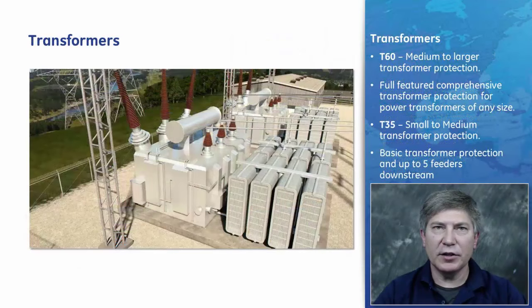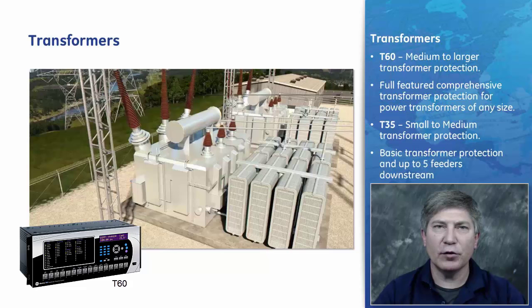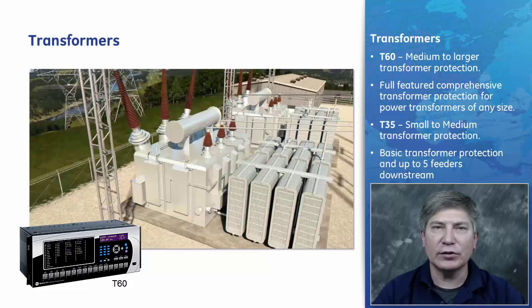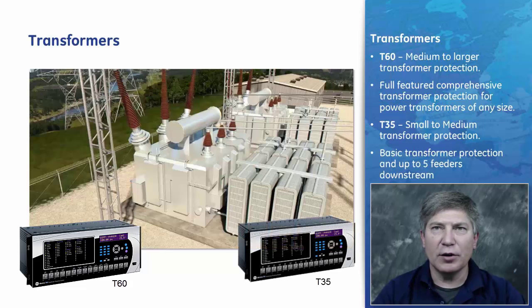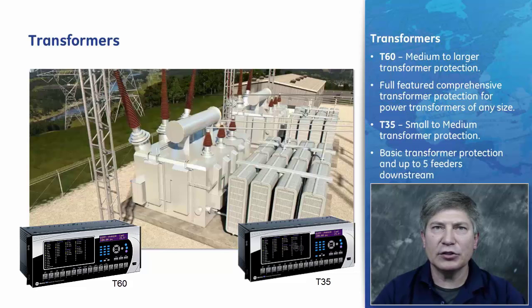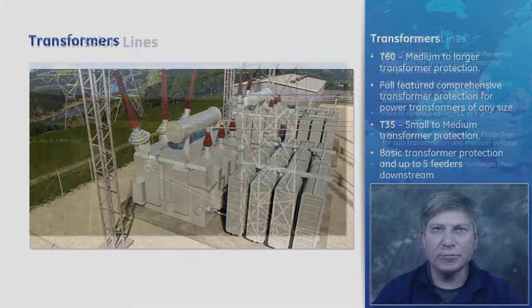Under transformers, we have the T60 for medium to large transformers. It provides automatic or user-definable magnitude reference winding selection for CT ratio matching and performs automatic phase shift compensation for all types of transformer winding connections. The T35 is basic transformer protection, capable of protecting combined main power transformers and up to five feeders downstream. The T35 provides automatic and user-definable magnitude reference winding selection for CT ratio matching, automatic phase shift compensation, and allows users to enable removal of zero sequence current for delta connection transformer windings.